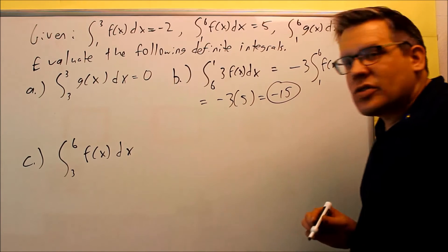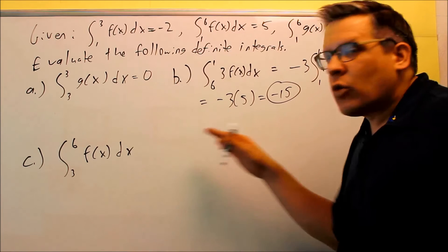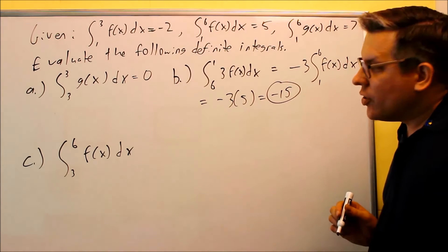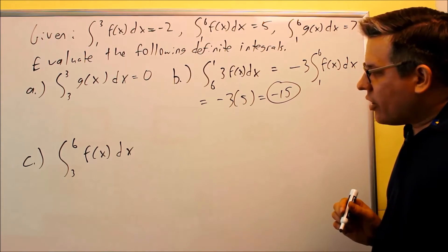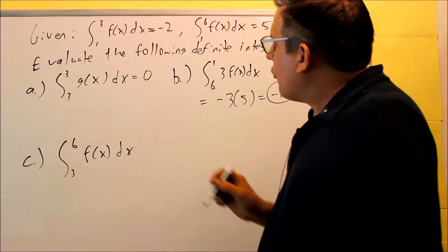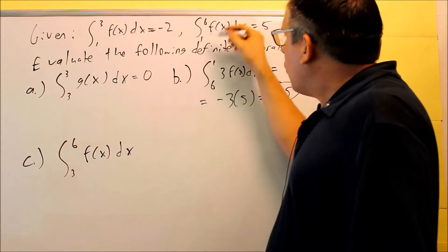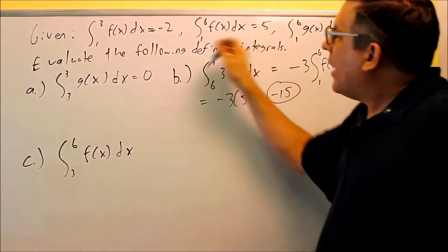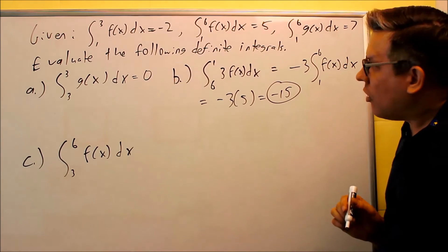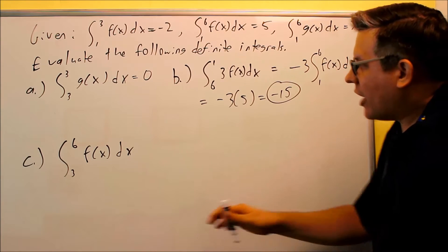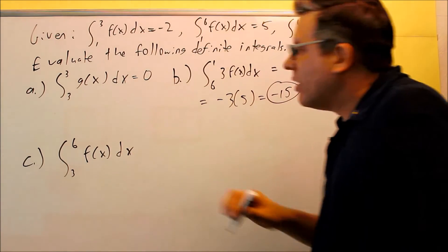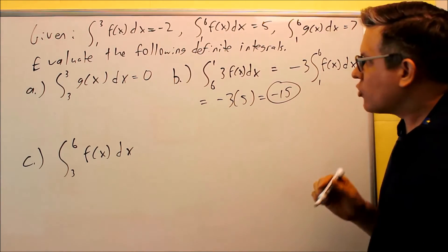Now for part c, what I have to do is this is going to involve the property where I break the limits up into two different things. So what I know about this is if I go from one to three and then one to six, I know that I'll basically be adding those together and I can get the integral all the way across. Now I don't want one to six, I want three to six. So here's what I'm going to do.